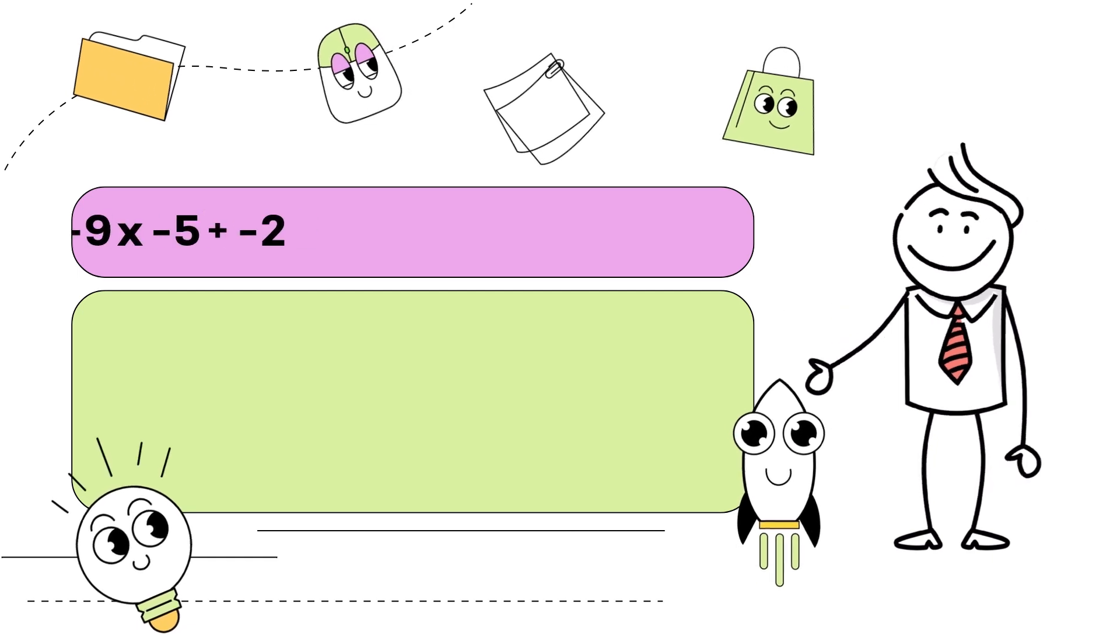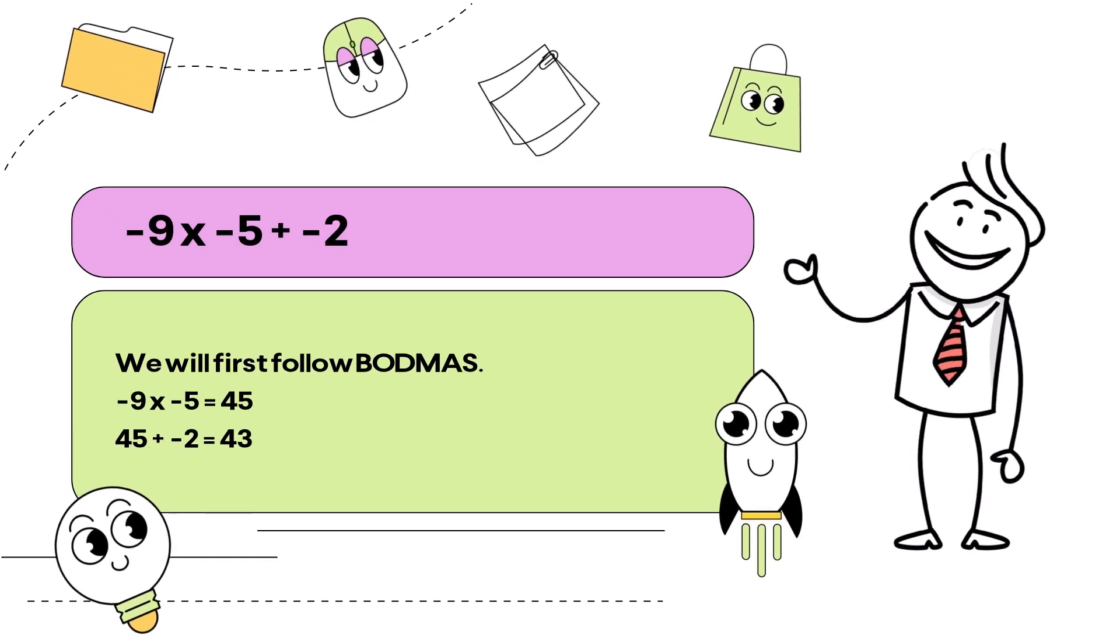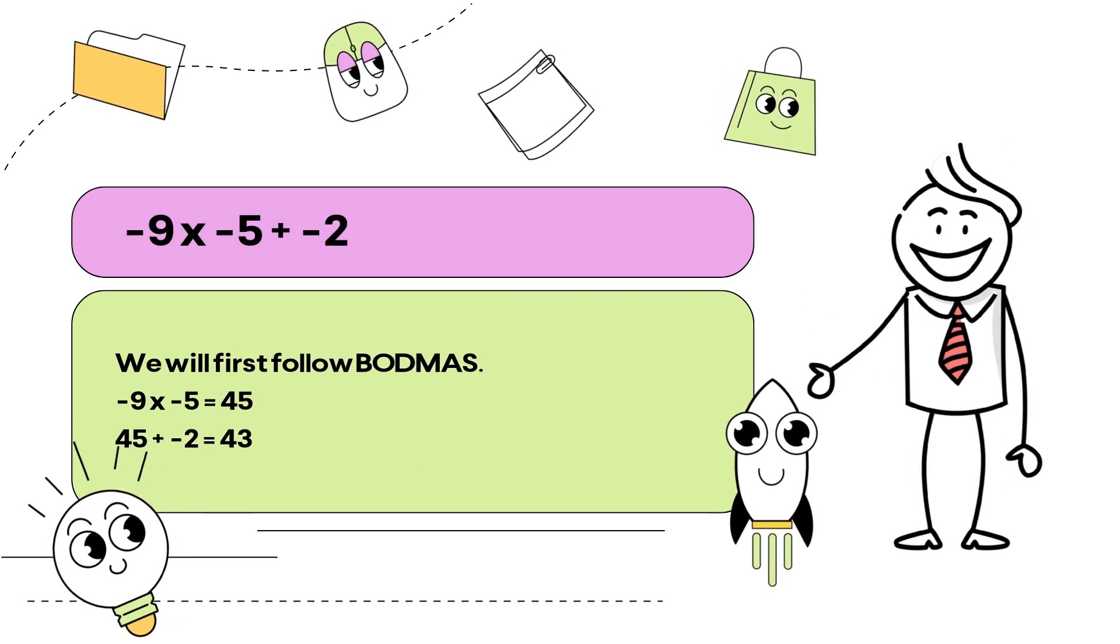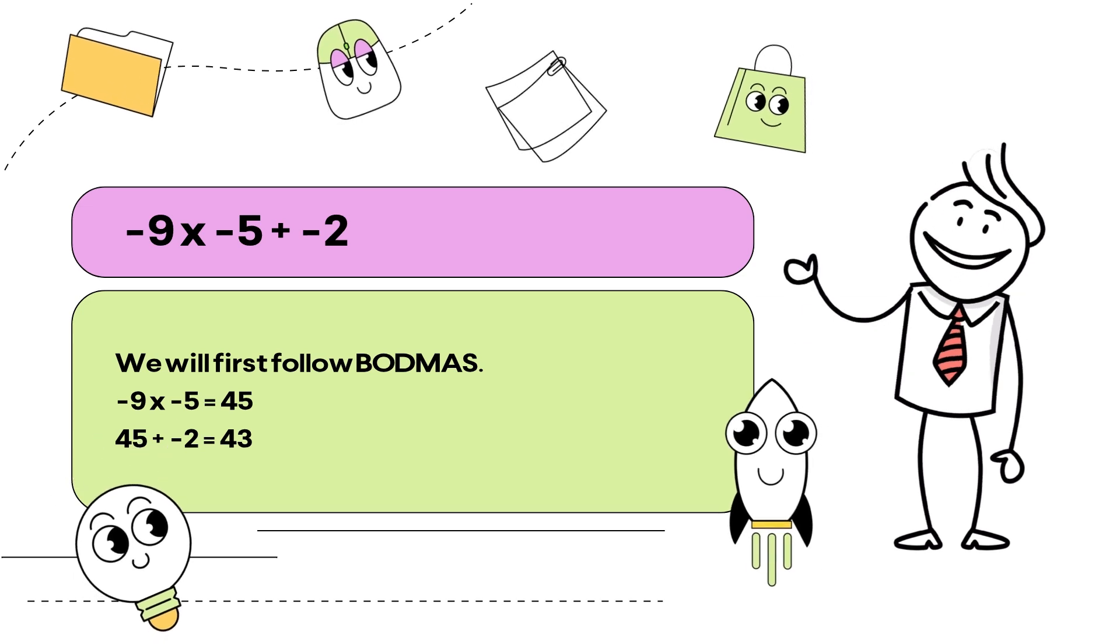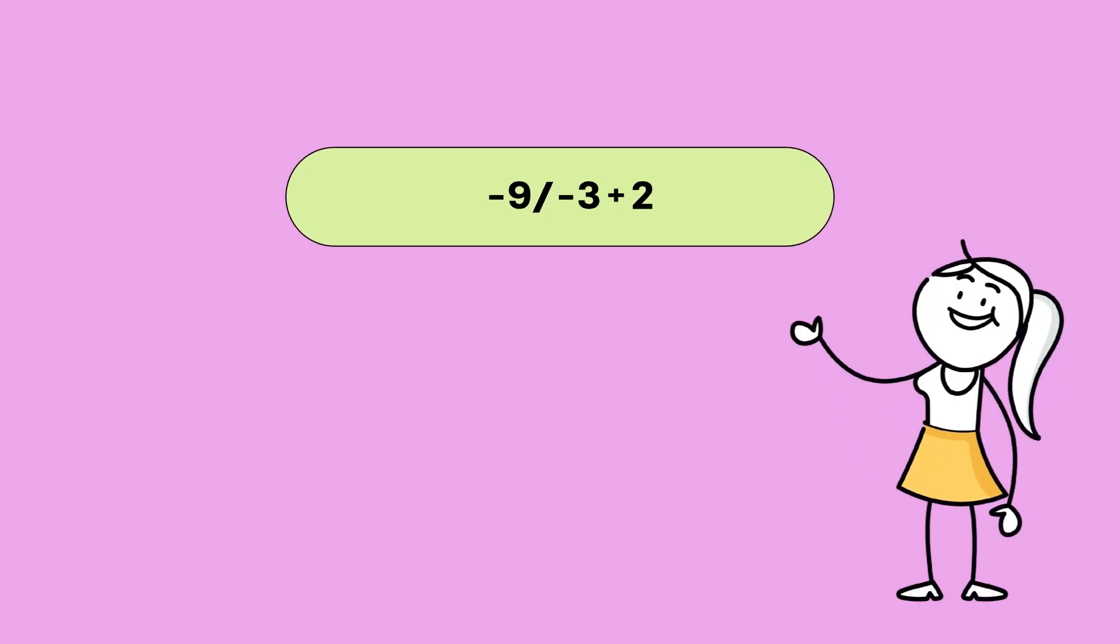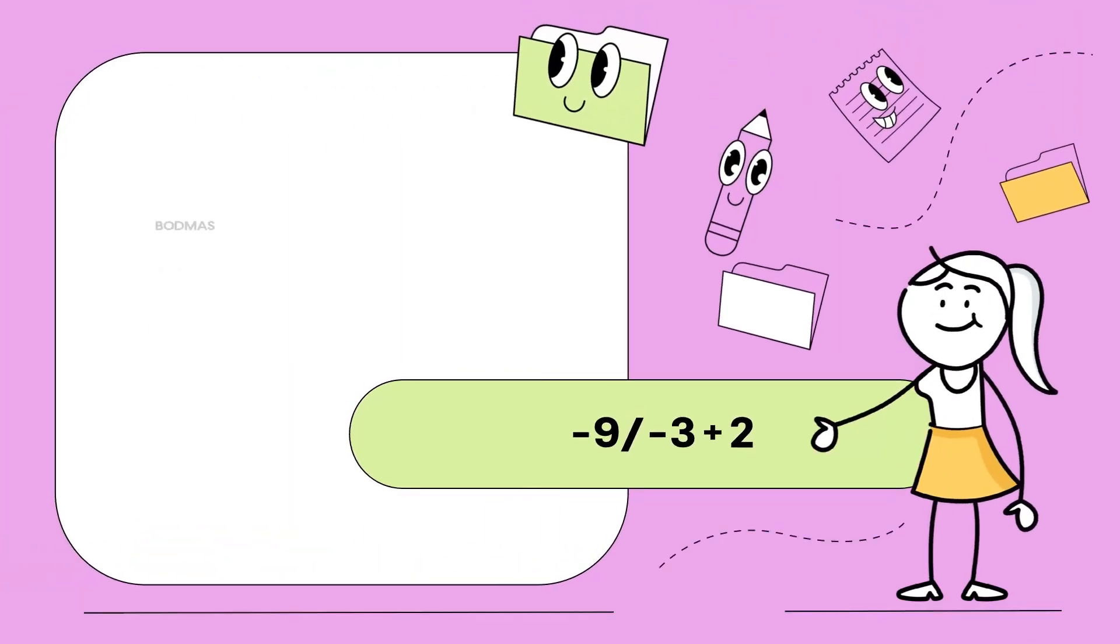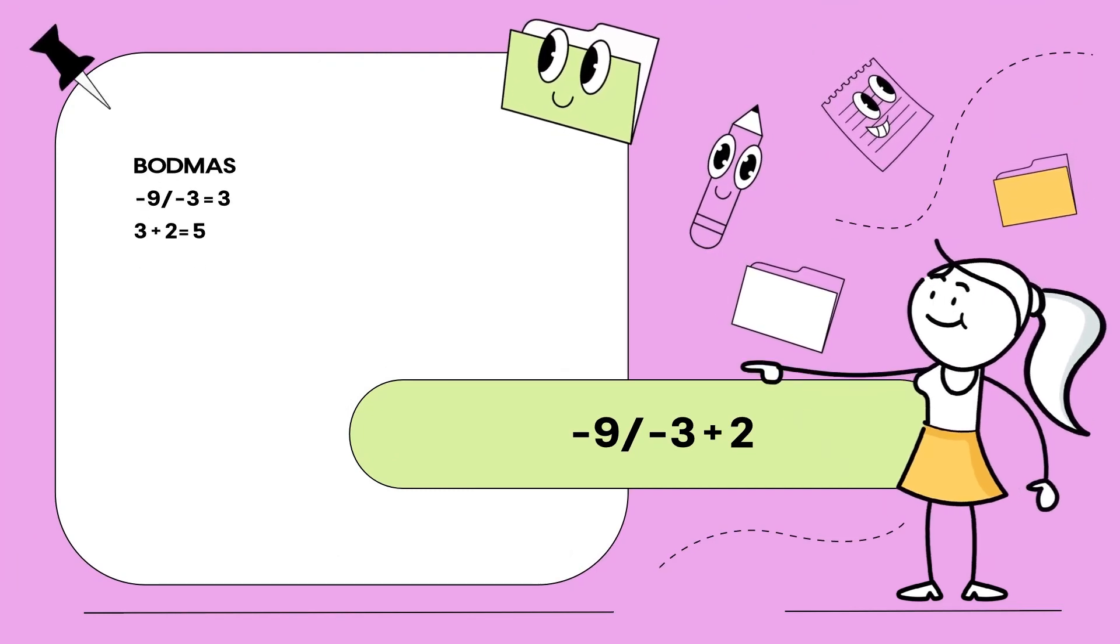BODMAS again, guys. Negative 5 times negative 9 is 45, and then take away 2 to get 43. Negative 9 divided by negative 3 is 3, and then add 2 will give us 5.